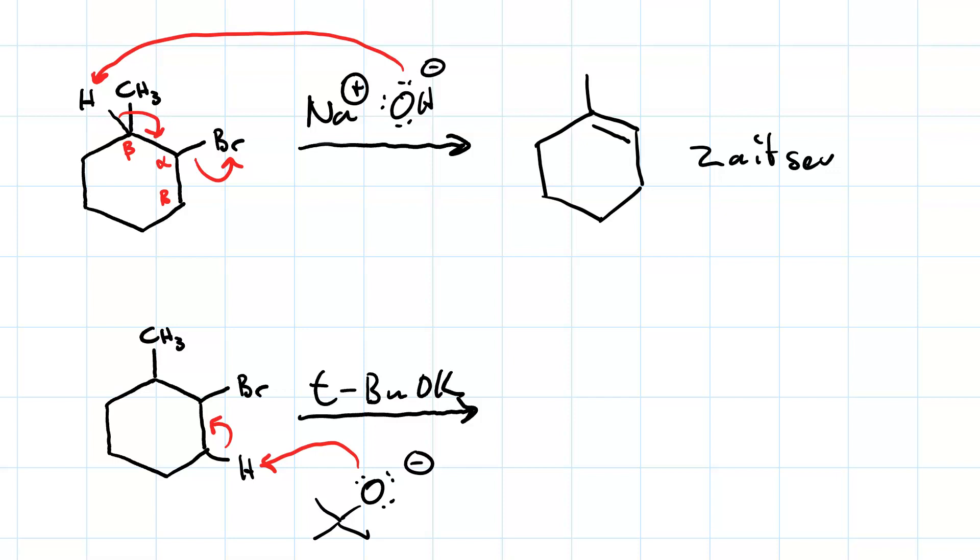There's my curved arrow that forms the pi bond. Forming the pi bond exceeds the octet on the alpha carbon, and so we have loss of a leaving group. So we get our Hoffman product.